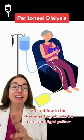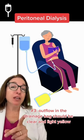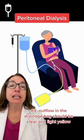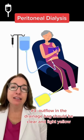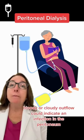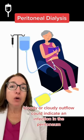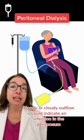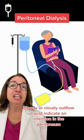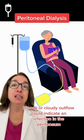Three, outflow in the drainage bag should be clear and light yellow. Bloody or cloudy outflow could indicate an infection in the peritoneum.